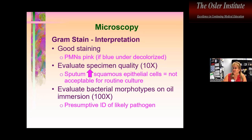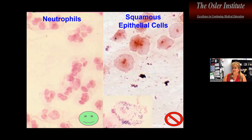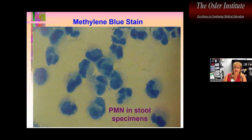Then evaluate bacterial morphotypes on oil immersion. This tells you whether the Gram stain is positive and gives a presumptive identification of the organisms likely causing infection. Neutrophils are good; squamous epithelial cells are bad. As shown in the inset on the bottom right of the slide, all superficial bacteria associated with squamous cells will grow in culture but don't mean anything clinically. We want lots of neutrophils and little or no squamous cells.